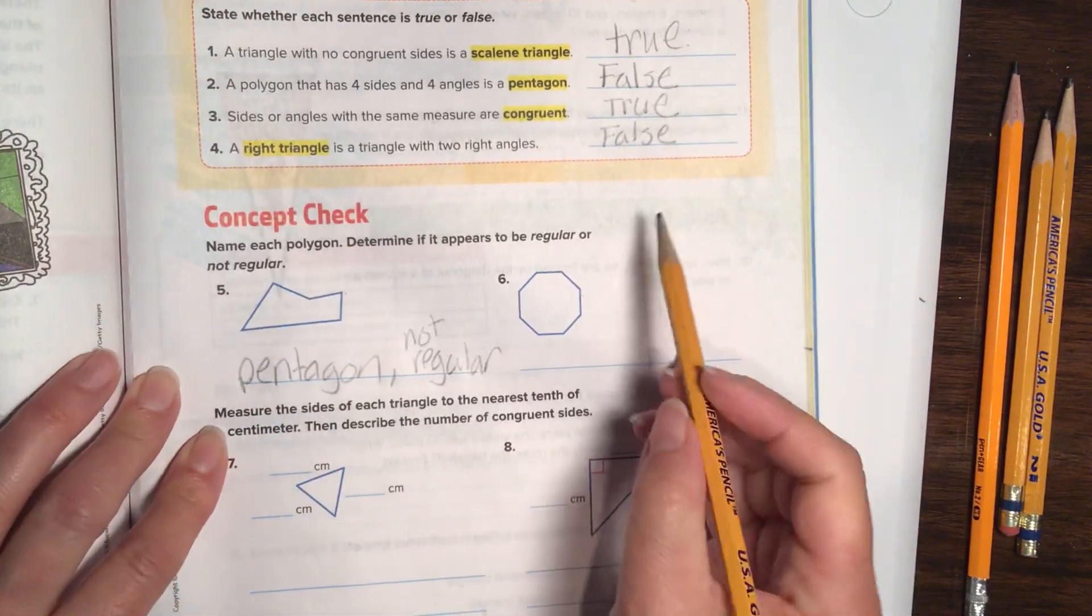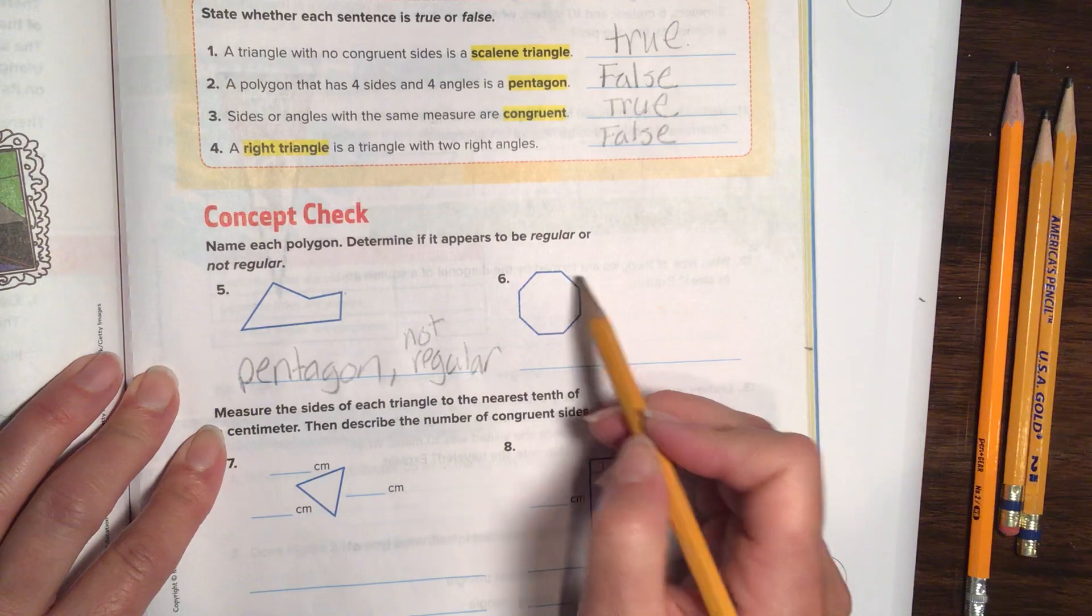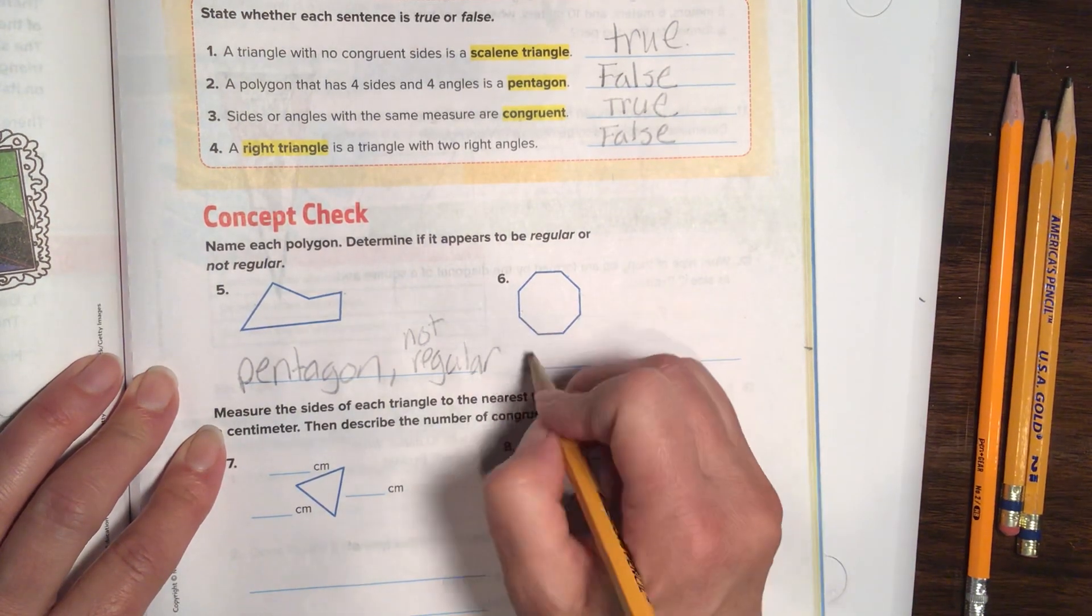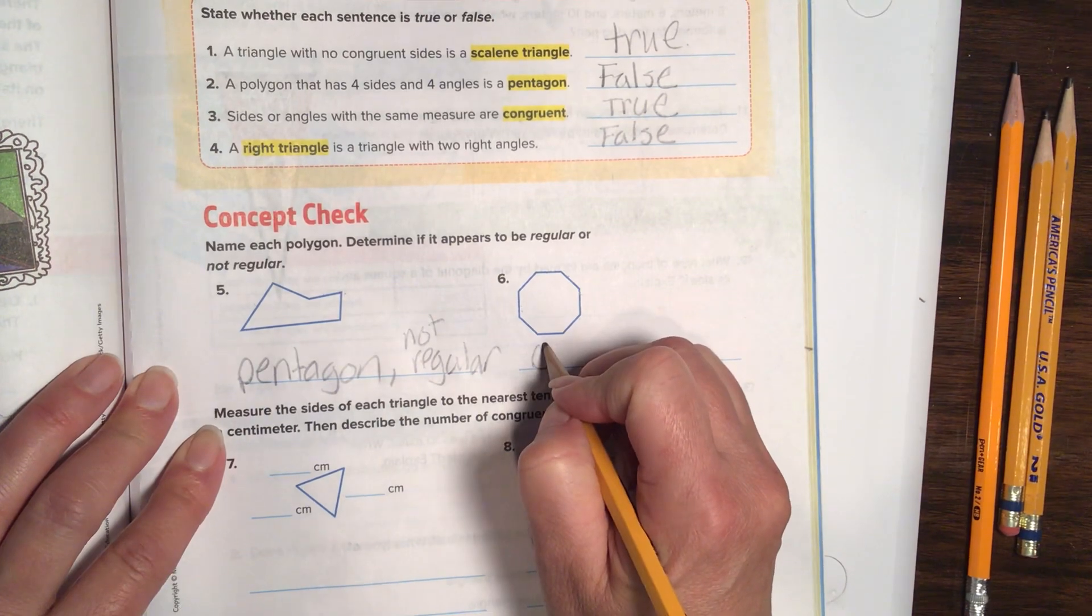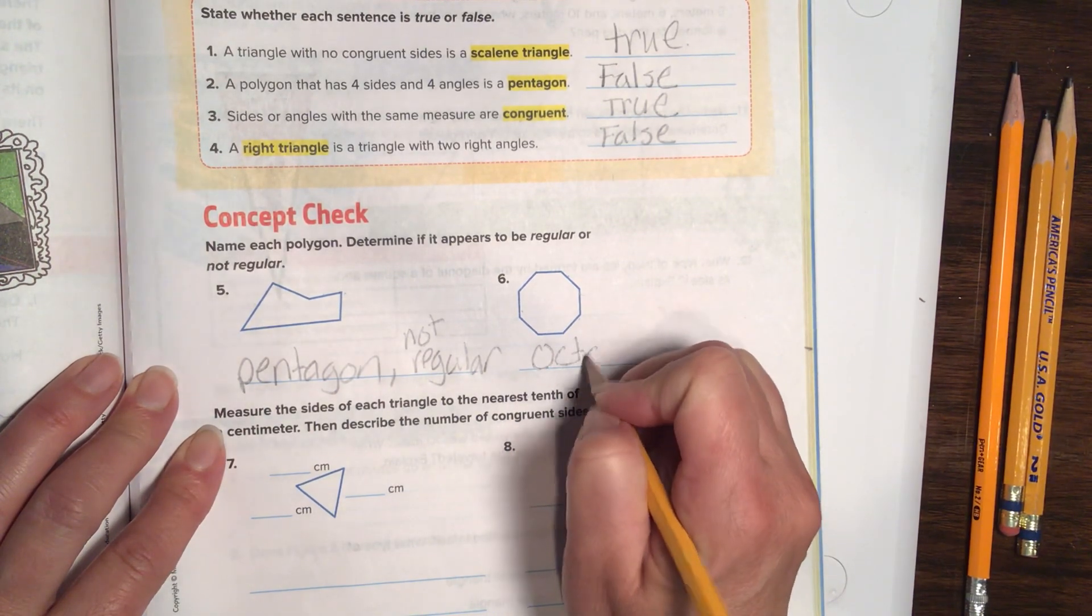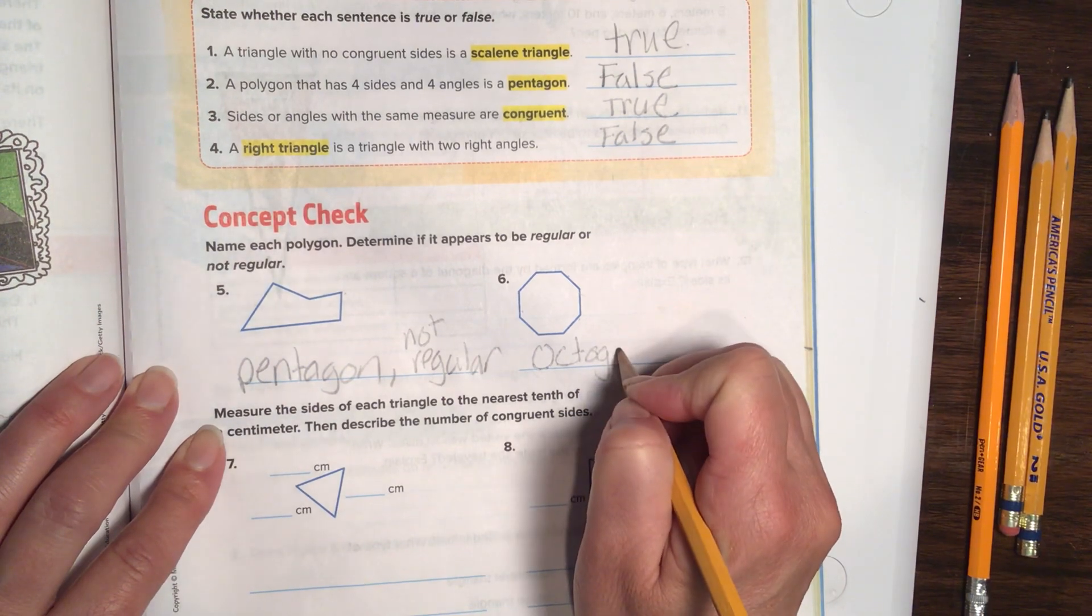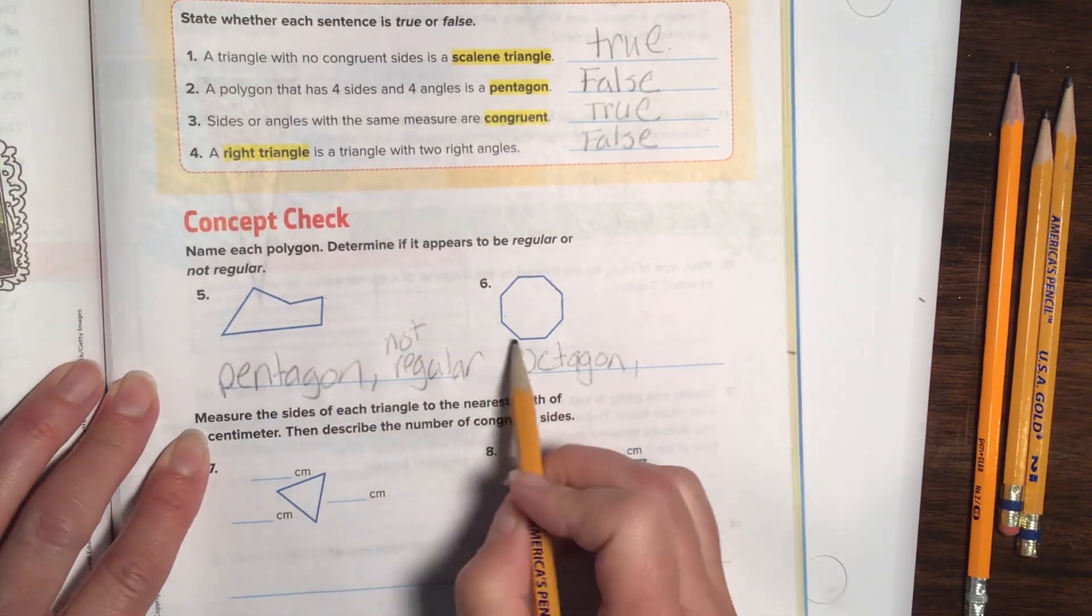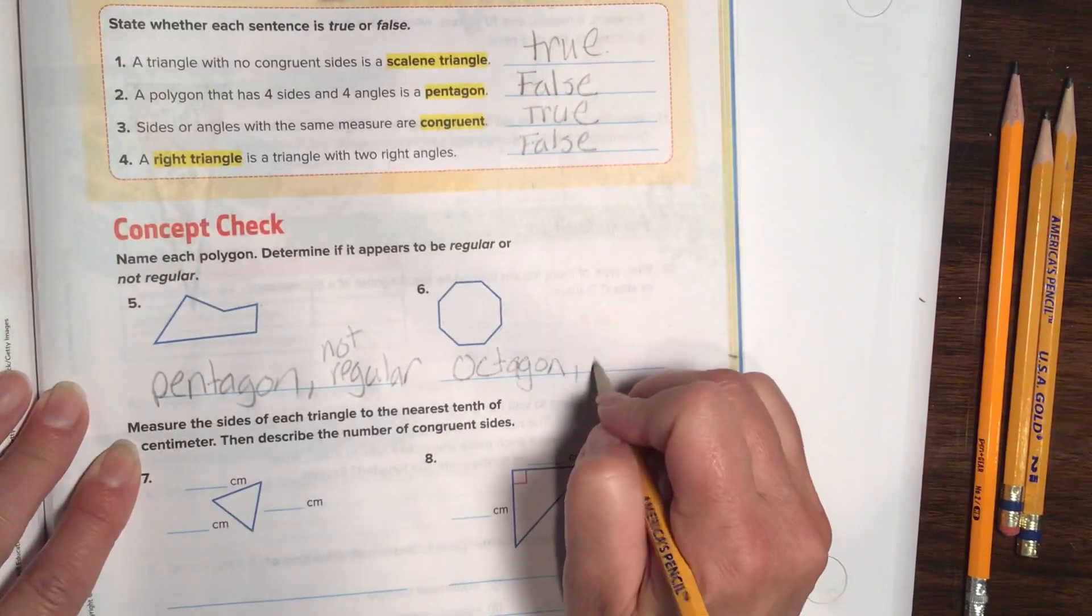Alright, number six. Let's count the sides. One, two, three, four, five, six, seven, eight. So eight, we have our lovely little octagon. Because remember, an octopus has eight arms. So an octagon has eight sides. And trying to write and spell at the same time is not working for me this morning. And they're all the same length. So we're going to say this is regular.